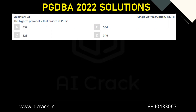Hi everyone, let's solve question number 33: the highest power of 7 that divides 2022 factorial. To solve this, if you have appeared for CAT or any other MBA examination you must know one shortcut, but we'll try to do this with the help of functions and basic theory.